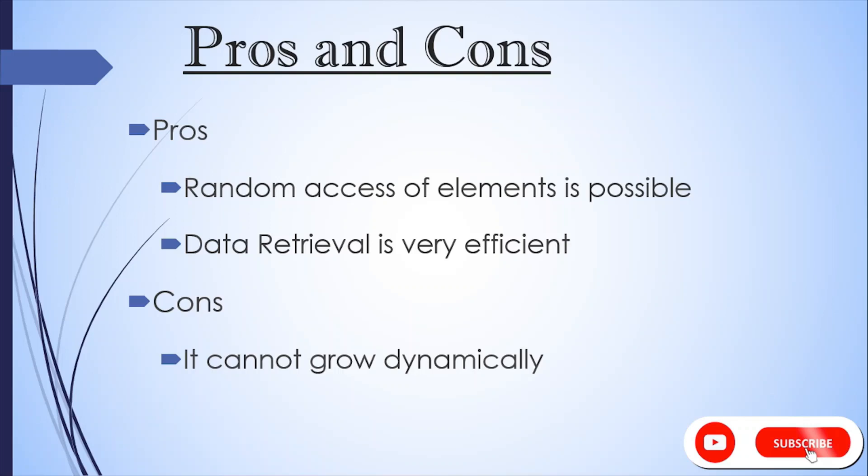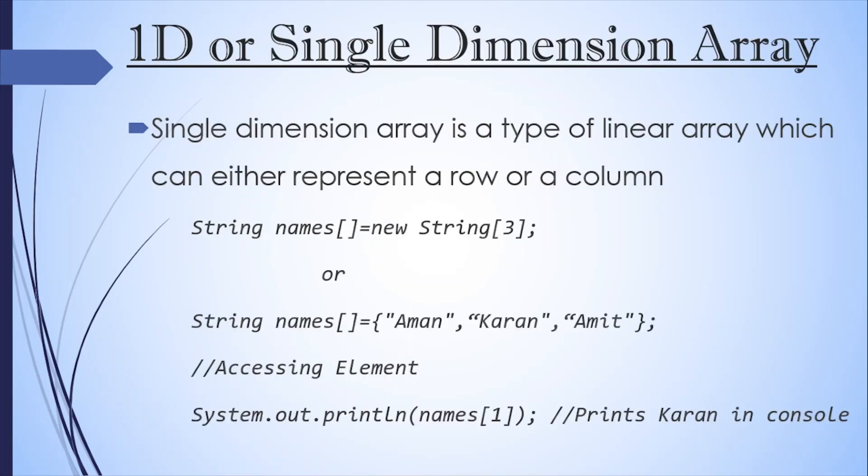Under cons, it cannot grow dynamically. That is, if we have declared an array of size 5, we cannot store more elements or we cannot update the same array to store more elements than the initially decided size. So in that way, it's a kind of rigid data structure. And if we want to store more elements, we need to create another array with the higher size and copy all the elements of existing array.